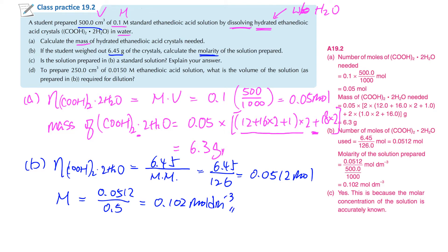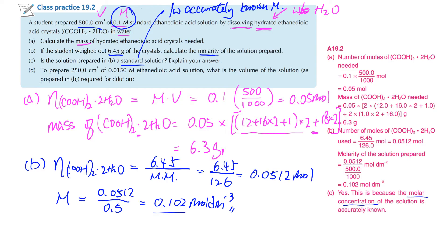So it makes sense - it is close to 0.1M. Then part C asks: is the solution prepared in B a standard solution? Remember, a standard solution means a solution with accurately known molarity. Right now you know the molarity accurately, so therefore yes, it is a standard solution. The reason is that the molar concentration of the solution is accurately known - remember 'accurately' is a very important word.